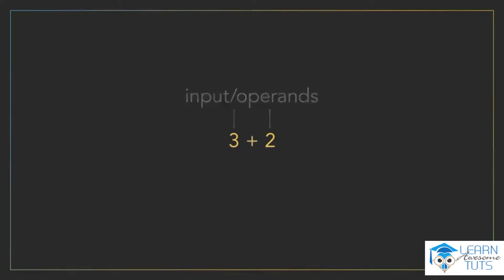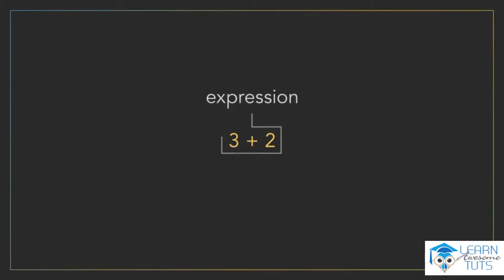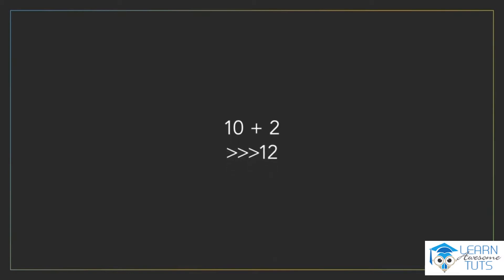In programming, the combination of operators and operands that break down to a single value are called expressions. Let's look at a few examples. If we take 10 plus two, what does that equal? 12, correct. 10 plus two is our expression, and 12 is what our expression evaluated to or equaled.